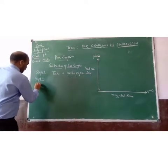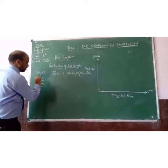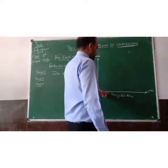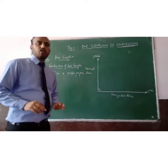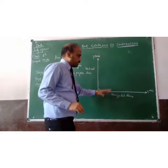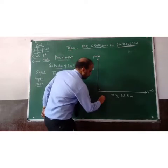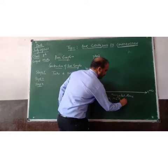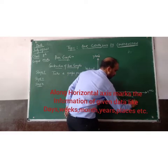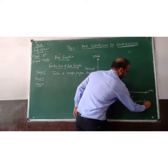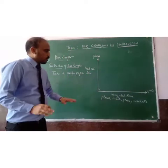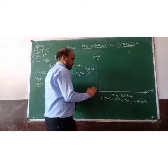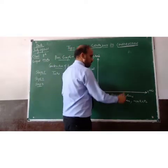Step three: along the horizontal axis, mark the expressions of the given data — such as place, month, year, etc. Along the horizontal line, you can mention the information of the given data like place, month, year, and so on.